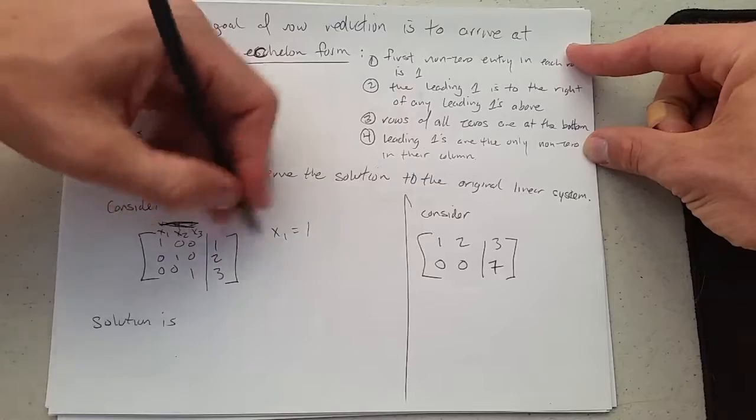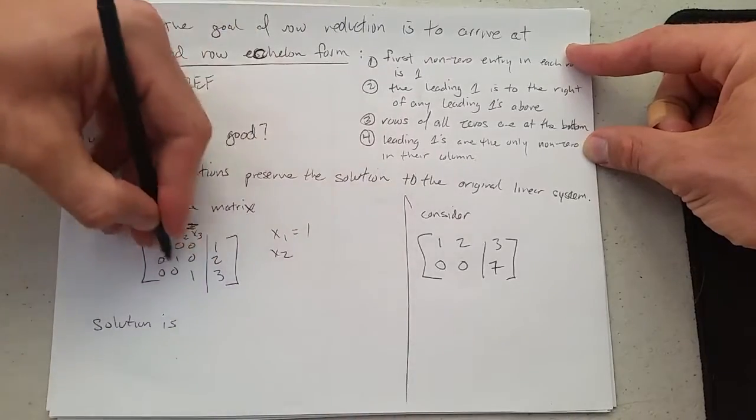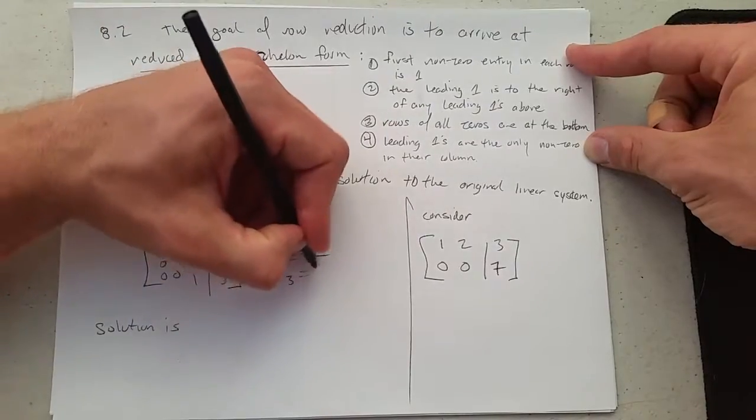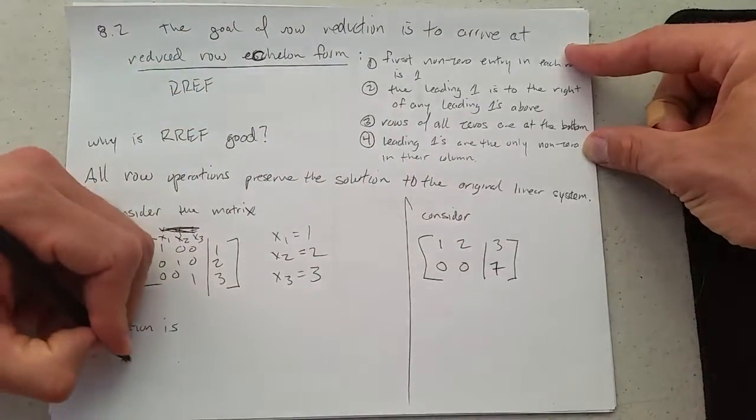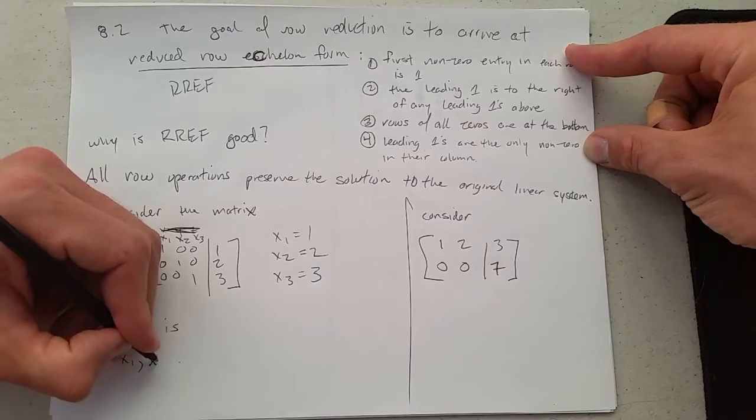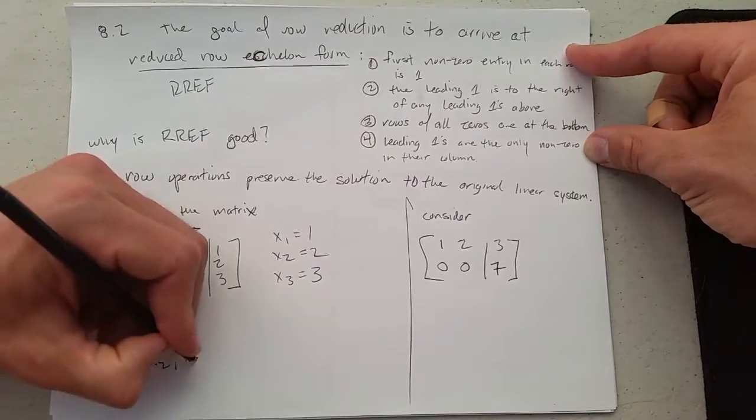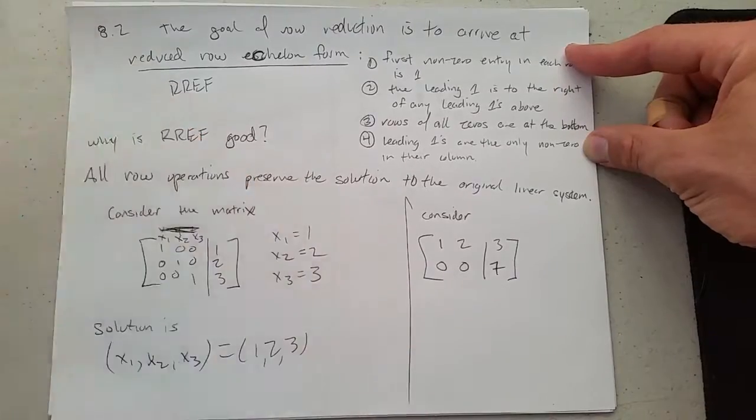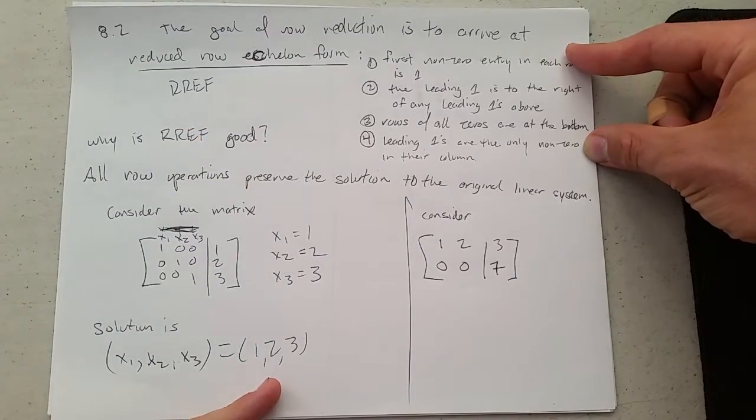x1 equals 1. That's row 1. 1x2 equals 2. And 1x3 equals 3. So our solution is the point (1, 2, 3). So this has a single solution, no free variables.